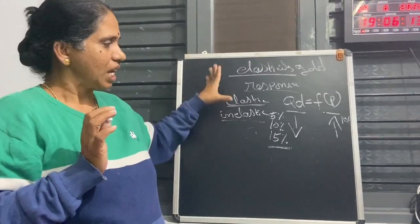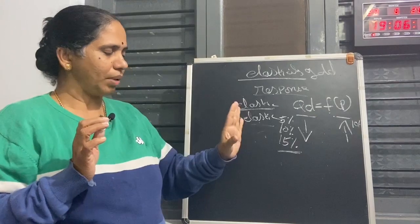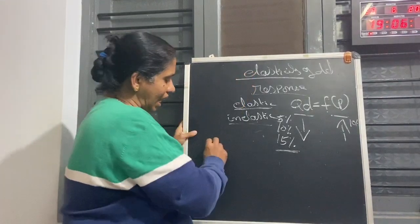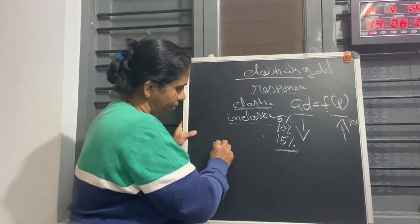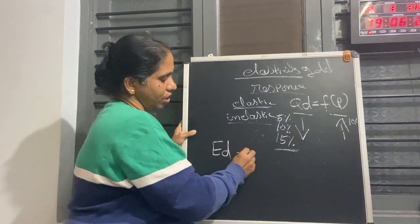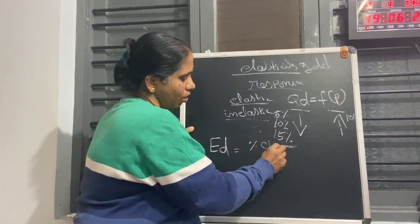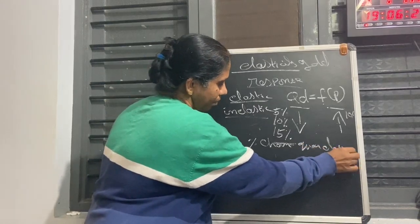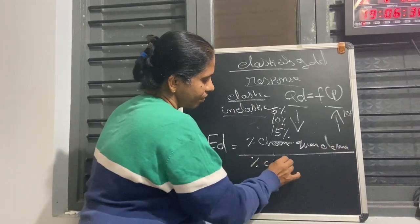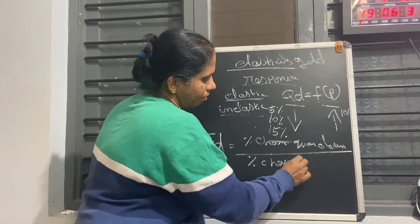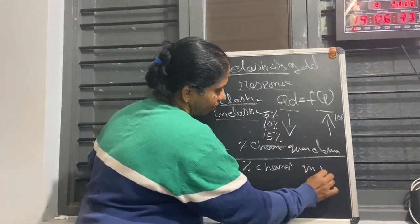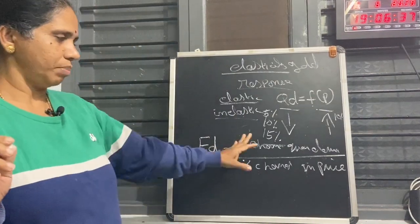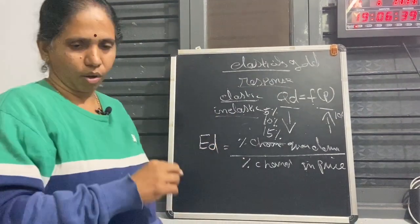Now I am going to give the formula, and then we will do a sum. The elasticity of demand is denoted by Ed. Ed equals percentage change in the quantity demanded divided by percentage change in the price. Here, quantity demanded and price — this is the formula. Ed equals percentage change. We will see the sum now.